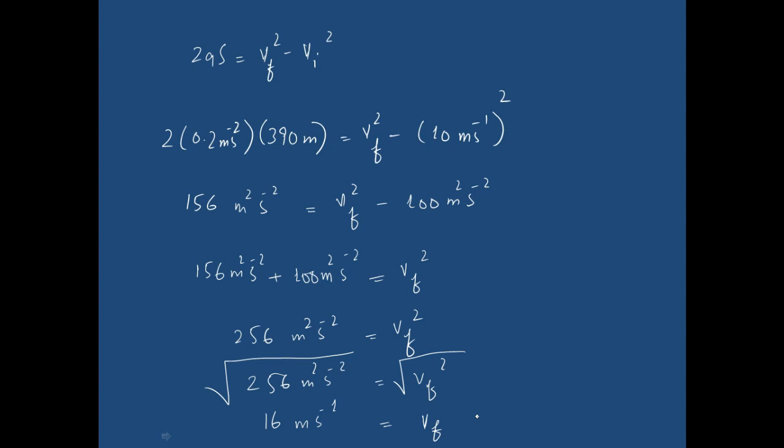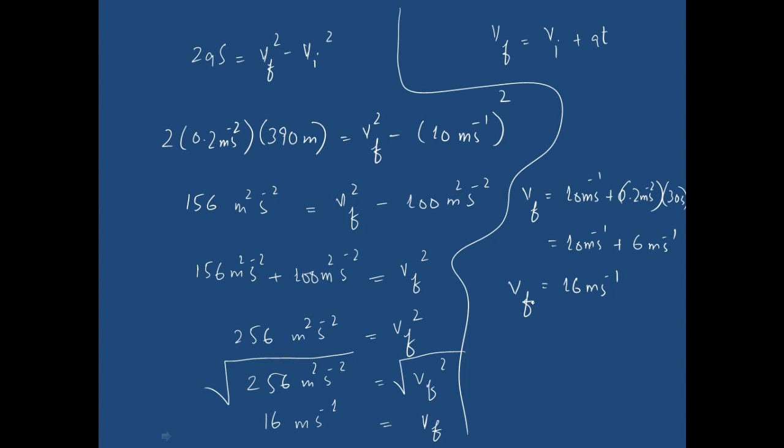So the final velocity of the car is 16 meters per second. We calculated this velocity with the third equation of motion. We can also calculate this velocity by using the first equation of motion, because vf also equals vi plus at. It's your choice which equation you want to use. So now vf equals, as we know, the initial velocity is 10 meters per second and acceleration is 0.2 meters per second squared for the time of 30 seconds. So again the velocity is 16 meters per second.